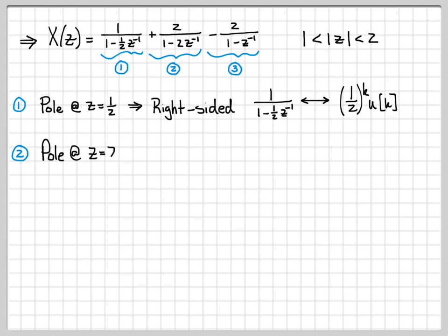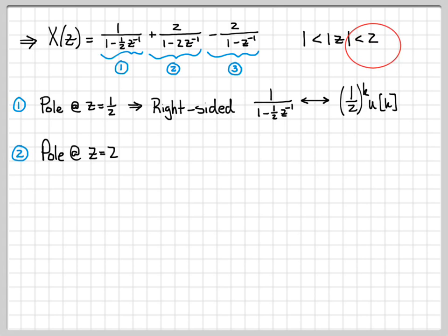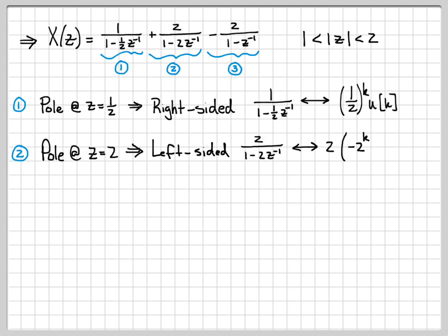Term 2 has a pole at z = 2, which is at the outer boundary of the region of convergence. Going further out would leave the ROC, so I need a left-sided signal. For 2/(1 minus 2z⁻¹), choosing a left-sided signal gives negative 2 · (2)^k · u(minus k minus 1) in the time domain. We always end up with a minus sign for left-sided signals, and the time-reversed unit step is u(minus k minus 1), not u(minus k).